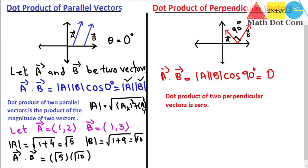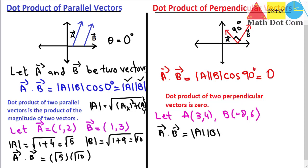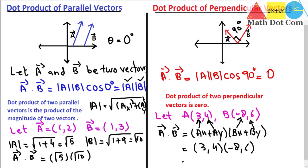Let's verify this algebraically. Let vector a be (3, 4) and vector b be (−8, 6). The dot product is calculated as: a dot b equals (ax × bx) + (ay × by). Here ax = 3, ay = 4, bx = −8, by = 6. So we get (3 × −8) + (4 × 6) = −24 + 24 = 0. This confirms the two vectors are perpendicular because their dot product equals zero.